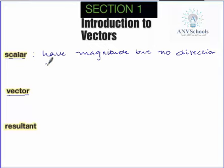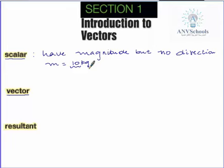For example, the mass of an object — if I say 10 kilograms, it doesn't tell us the direction; it only tells us the magnitude or amount of matter inside the object. Mass is a scalar physical quantity, and scalar quantities are expressed by a number and a unit. Mass doesn't have direction, so it is a scalar physical quantity.